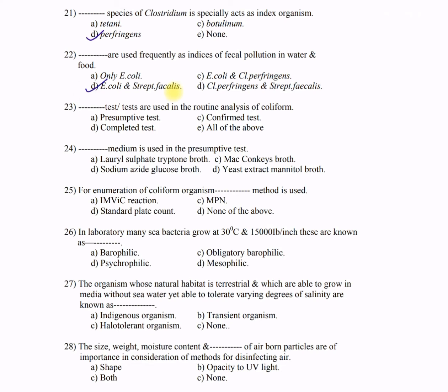Question 23: Dash test or tests are used in the routine analysis of coliform — A) presumptive test, B) confirmed test, C) completed test, D) all of the above. The correct answer is D — all of the above. The presumptive test, confirmed test, and completed test are together used for the analysis of coliform.